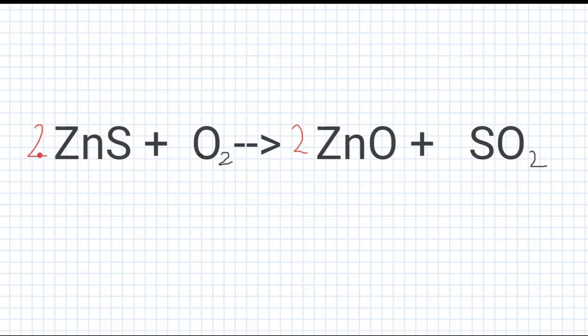Now look what happened. When we added two there, there's two sulfur, right? Now if there's two sulfur, we're going to have to change it up again. We're going to have to add two here.